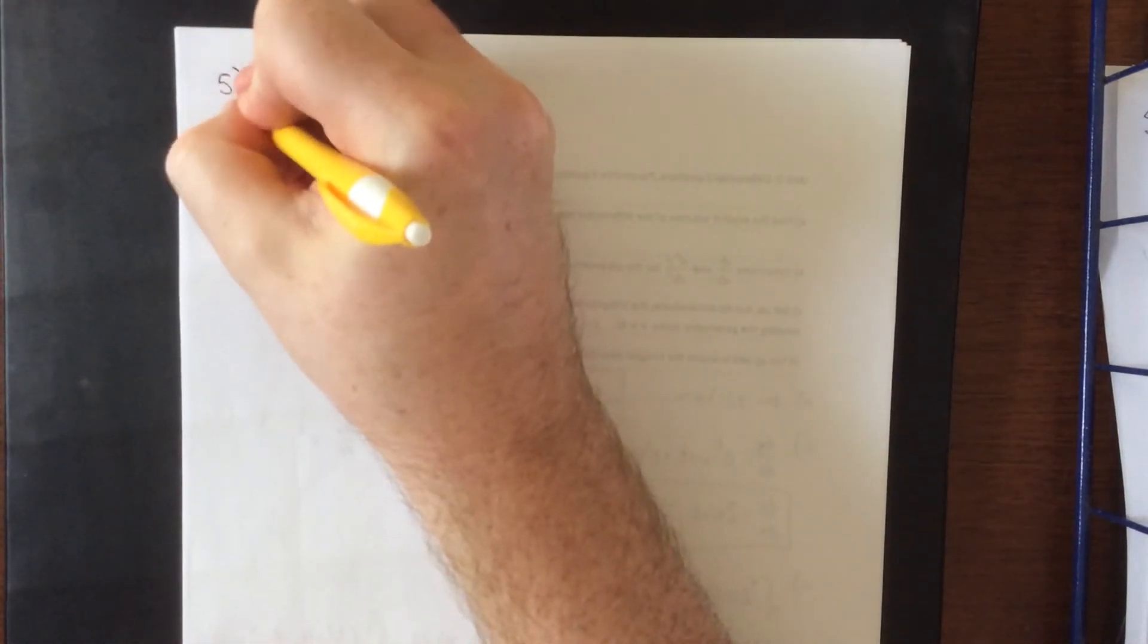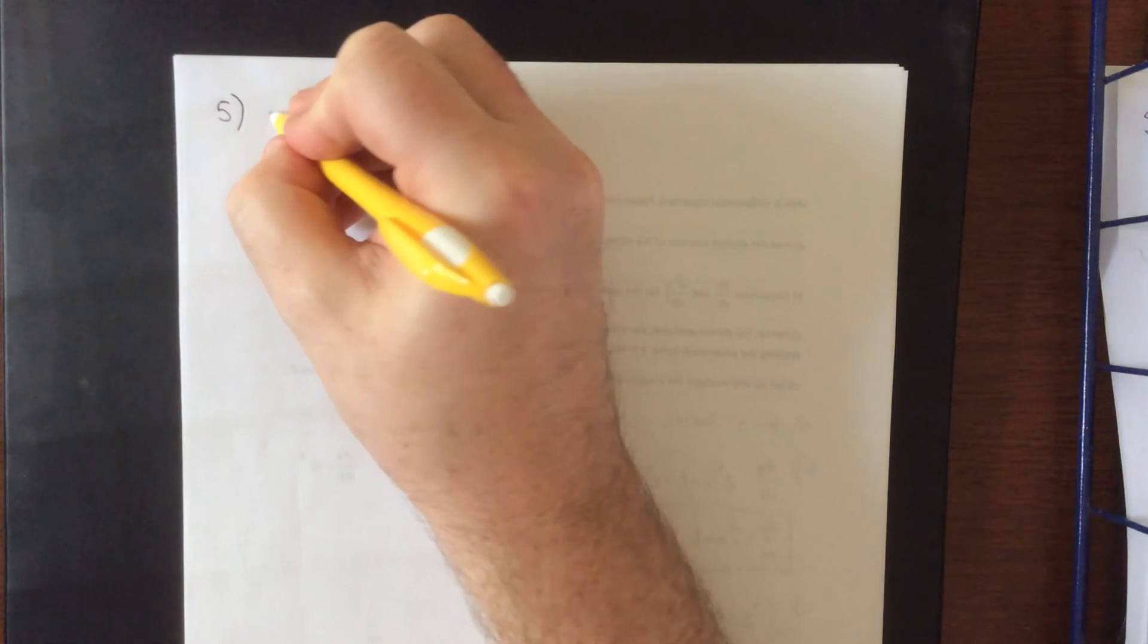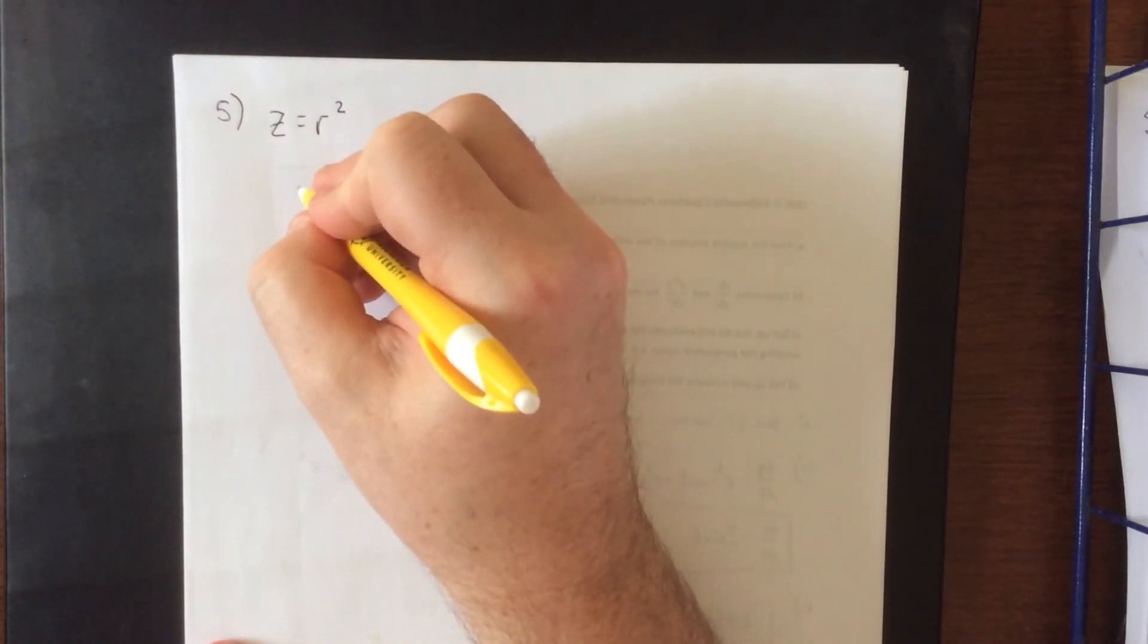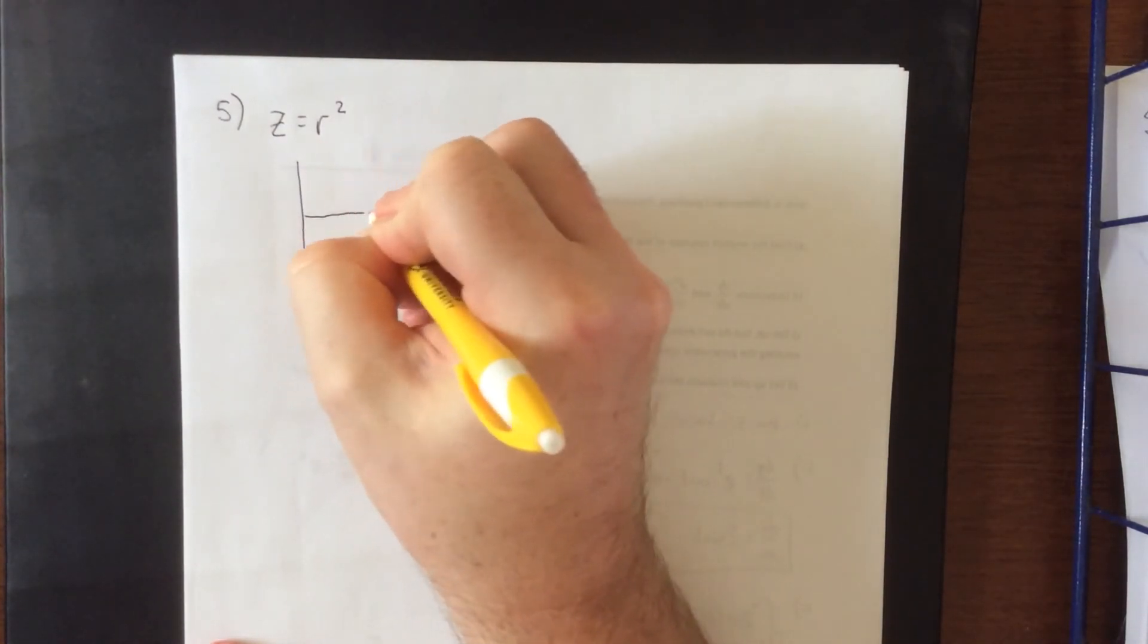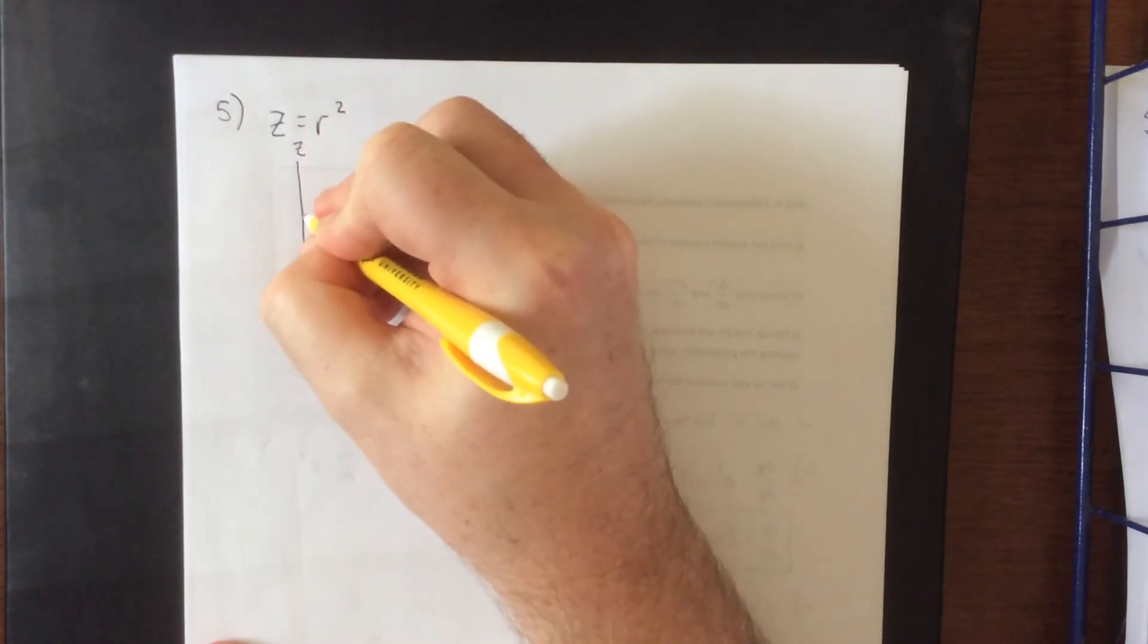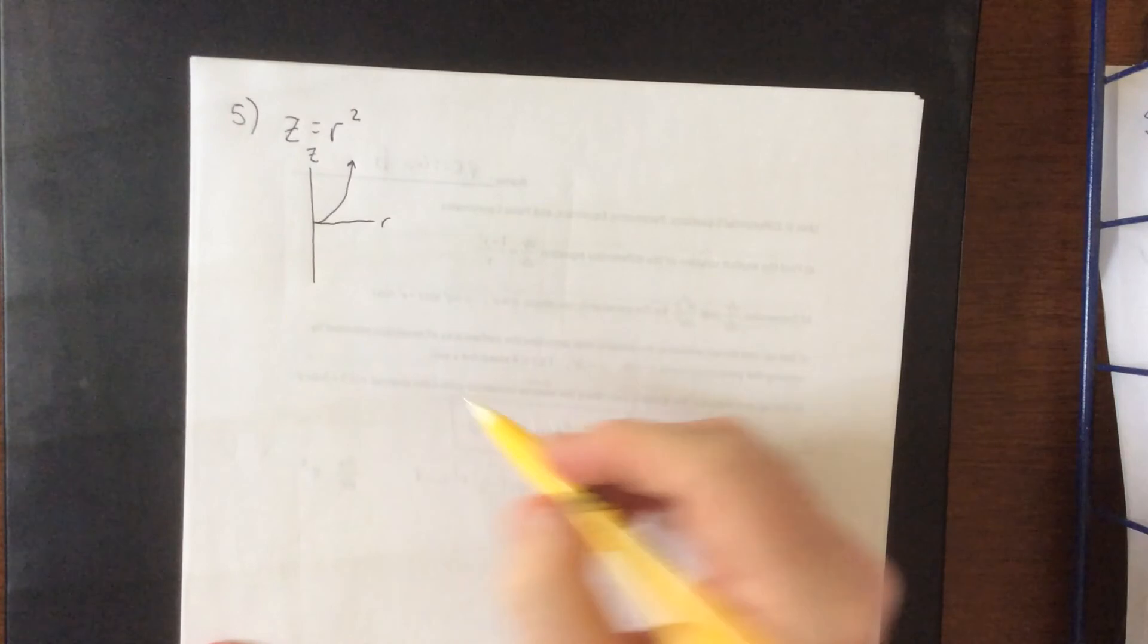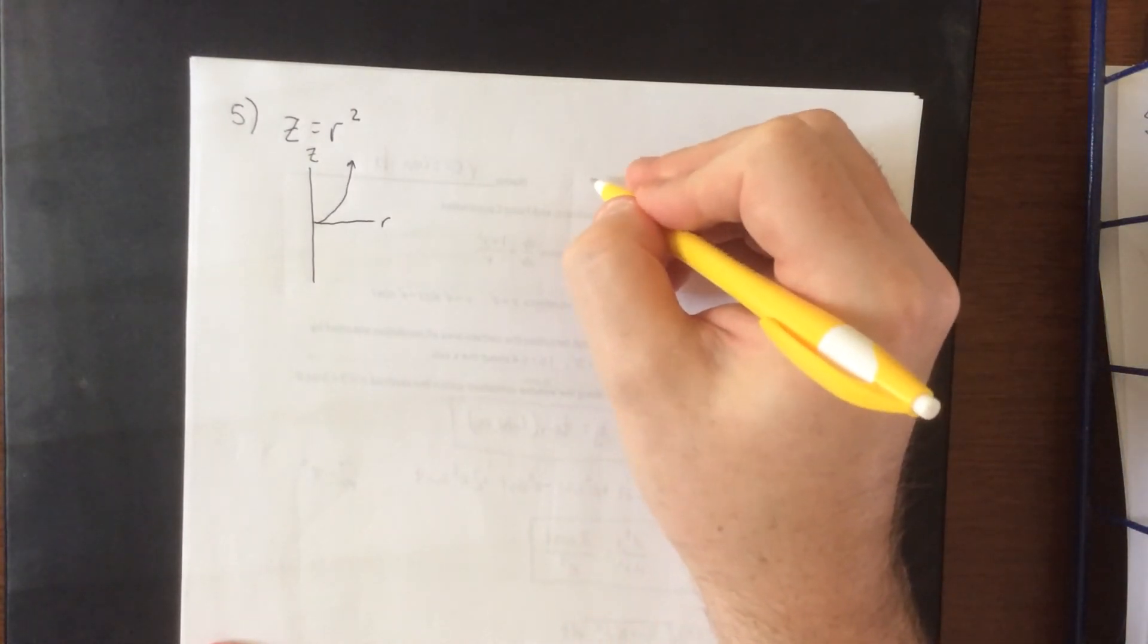The other quadric surface that tends to show up pretty frequently, and hopefully this will be fairly straightforward to wrap your head around, is z equals r squared. So z equals r squared. The rz trace for this would simply be a parabola. So imagine taking this parabola and rotating about the z axis.